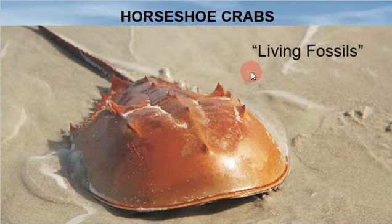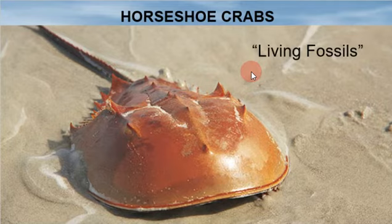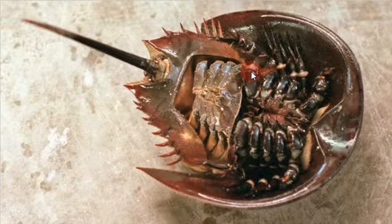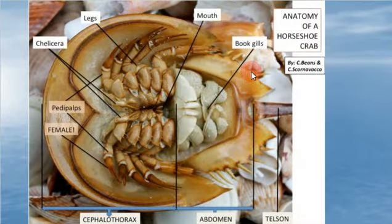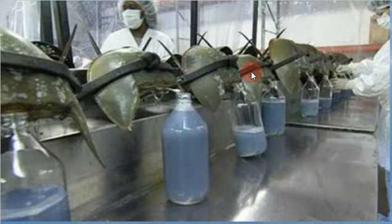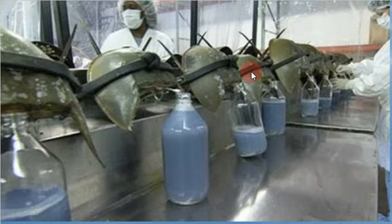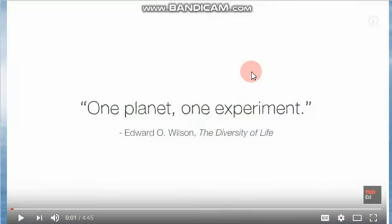Another one that lives in this area is the horseshoe crab. We already did a dissection of it — looking at its external anatomy — and it had those really cool book gills underneath. I want to talk about them because it turns out we use horseshoe crabs for medical purposes. They have blue blood. The chemical in our blood that makes it red is called hemoglobin, but these creatures have a different chemical. We've discovered we can use that for medicines for people with blood disorders.